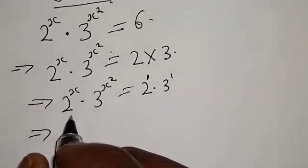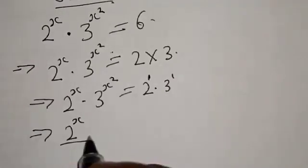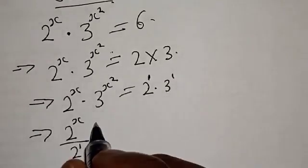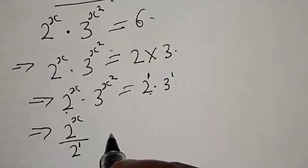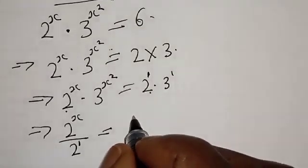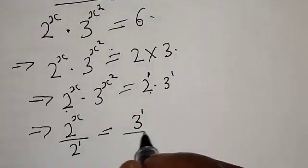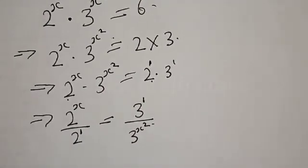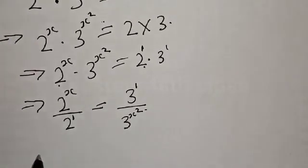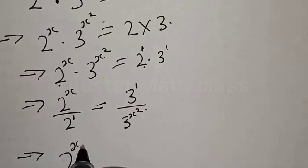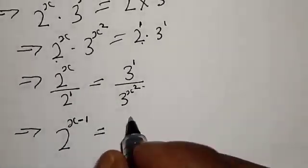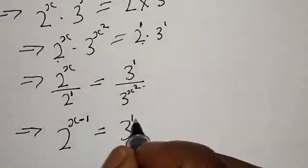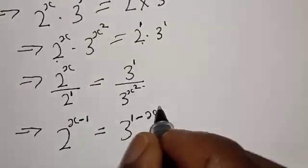This implies that we have 2 raised to power x over 2 raised to power 1, since both share base 2, which will be equal to 3 raised to power 1 over 3 raised to power x squared. This simplifies to 2 raised to power x minus 1 equal to 3 raised to power 1 minus x squared.